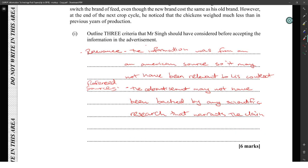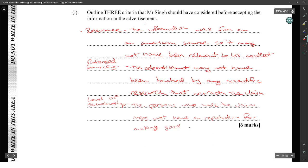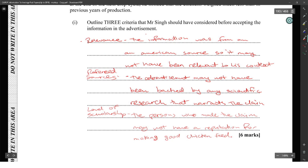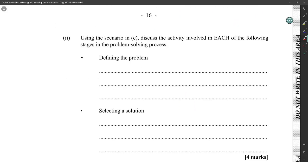Those three would be good. There are lots of other criteria, but you have to make sure the criteria are making sense in this context. Using this scenario, discuss the activity involving each of the following stages of the problem-solving process. Define the problem is determining what problem is affecting the farmer.